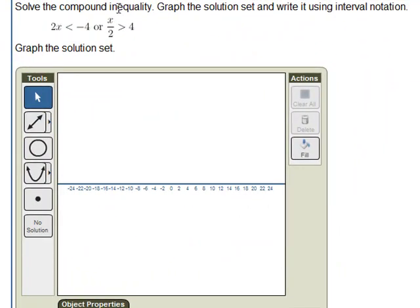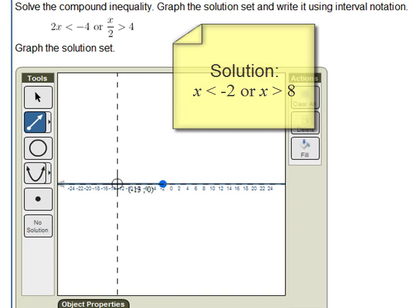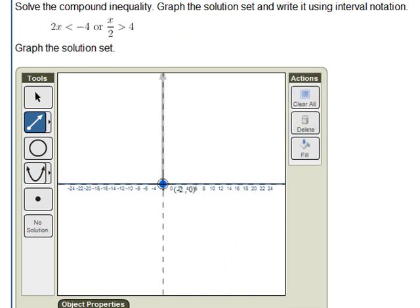We need to solve the compound inequality 2x is less than negative 4 or x over 2 is greater than 4. If we solve for x in each case, we get x is less than negative 2 and x is greater than 8. This is going to require us to graph two rays. First, the ray to show that x is less than negative 2. Again, we use a second point to tell the ray which direction to go. So far, my graph looks like this.